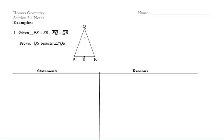In the second set of notes for section 3.4, we are focusing on proofs. Make sure you read the given information and mark your diagram with tick marks to see what we're working with. So we're marking those congruent segments at this time.